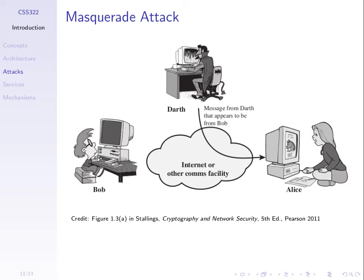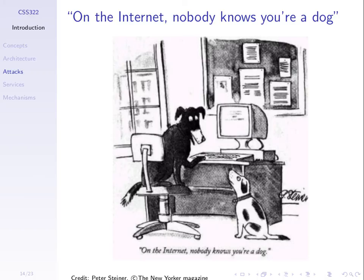It's an active attack. If there was no attack, Bob sends nothing and Alice receives nothing. But the introduction of the attack means Alice receives one message — we've altered the system behaviour. This is an active attack — something changes because of the attack. And there's a famous comic on the internet: 'nobody knows you're a dog,' because when you're communicating with someone on the internet, there's generally no built-in authentication mechanisms — no way normally, with the normal internet protocols, to confirm that the message you're receiving is from who they say they are.